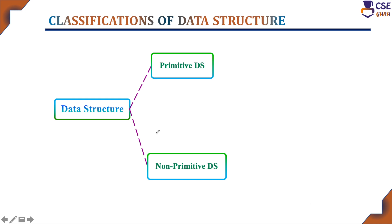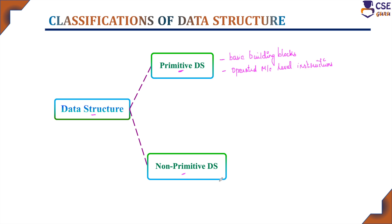Data structure is nothing but a systematic way of organizing data by expressing its relationship. The two main categories are primitive data structure and non-primitive data structure. Primitive data structures are the basic building blocks in data manipulation and operations, and are directly operated by machine-level instructions. Non-primitive data structures are derived from primitive data structures and are advanced structures. They concentrate on structuring groups of data items and cannot be directly operated by machine-level instructions.